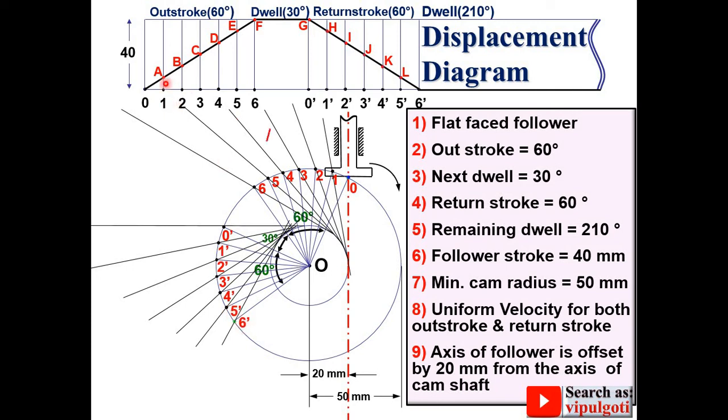Now transfer this distance 1a on this tangent line. Next transfer 2b distance with the help of the protractor on the corresponding tangent lines. Similarly 3c, next 4d, next 5e, next 6f.